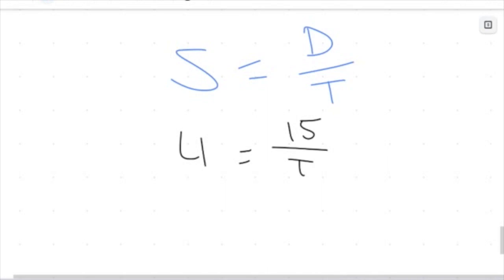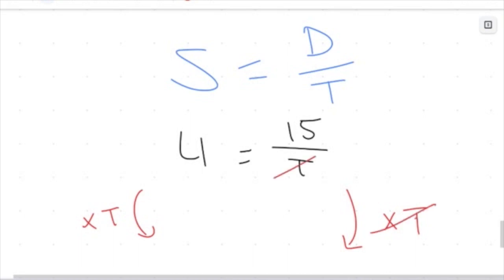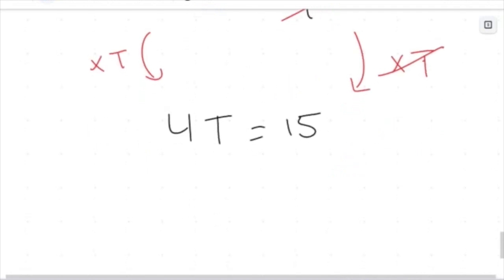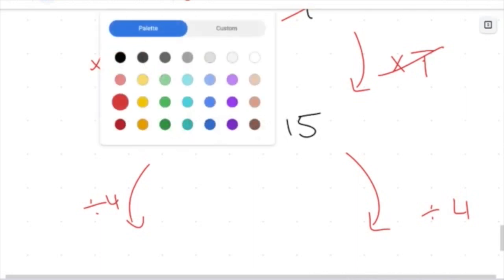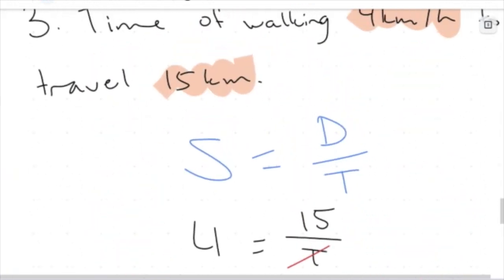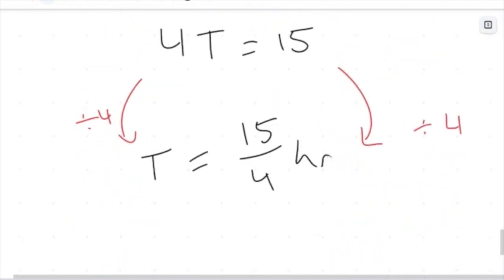I have 15 being divided by T giving me 4. I want T on its own, so I multiply both sides by T — that removes it from the denominator and gives me 4T equals 15. To find the time taken, I divide both sides by 4, giving me T equals 15 over 4. Since we have kilometers per hour, the answer is in hours.